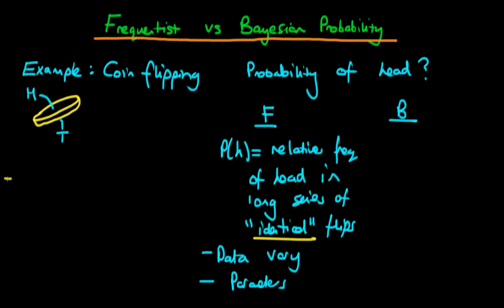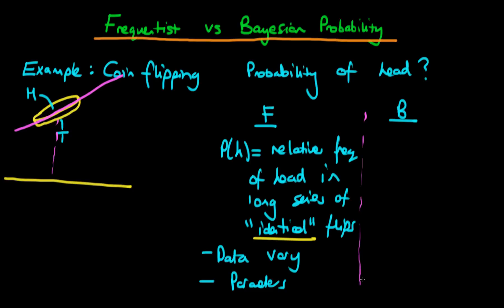If we had our coin above a table with a certain orientation and a certain distance from the table, and we were to repeat this process exactly, then because the system is deterministic, we would actually get the same value every single time. So we run into issues with the frequentist view — what exactly do we mean by identical flips? Perhaps we define identical more loosely, keeping the coin a certain distance above the table while varying the orientation, but already we're getting into a subjective view of what identical means.